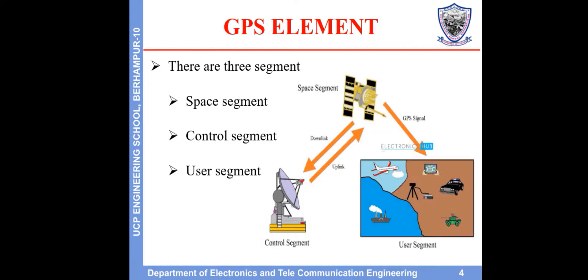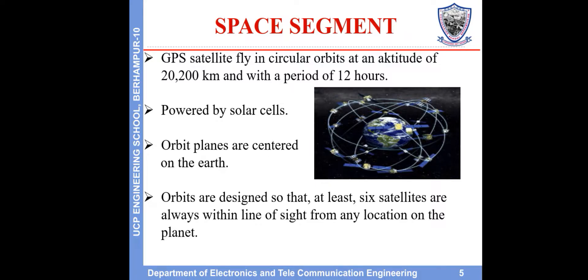GPS elements. There are three segments: the space segment, the control segment, and the user segment. The space segment consists of GPS satellites that fly in circular orbits at an altitude of 20,200 kilometers with a period of 12 hours. Powered by solar cells, orbits are centered on the earth and designed so that at least six satellites are always within line of sight from any location on the planet.